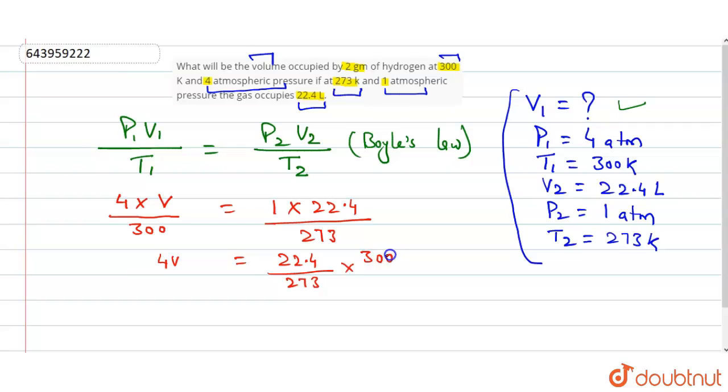22.4 upon 273 into 300, 4 will become here 4. So when you calculate this, you will find here 6.15 liter. So the volume occupied by this instant of values, 2 gram of hydrogen, is 6.15 liter. So final answer will be 6.15 liter.